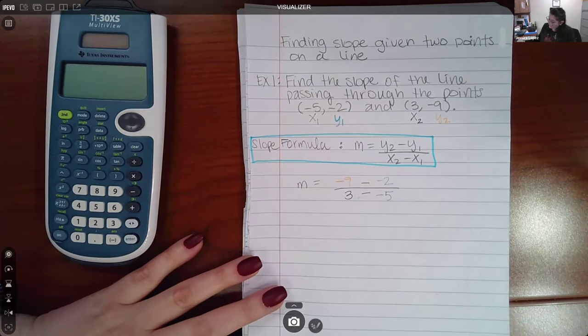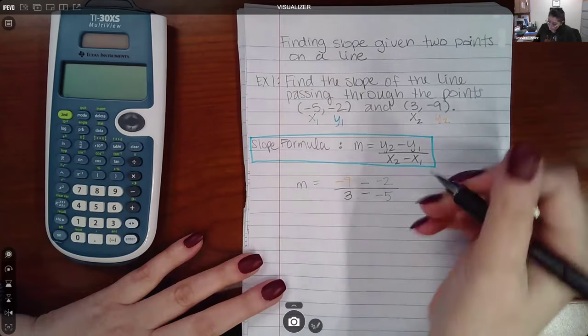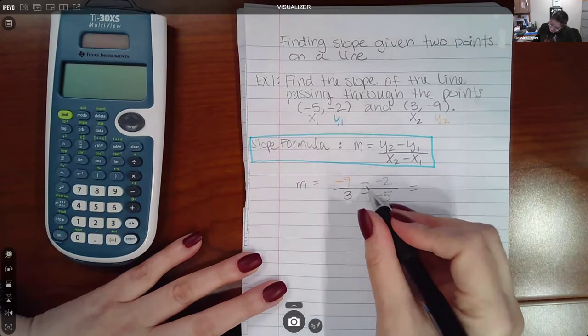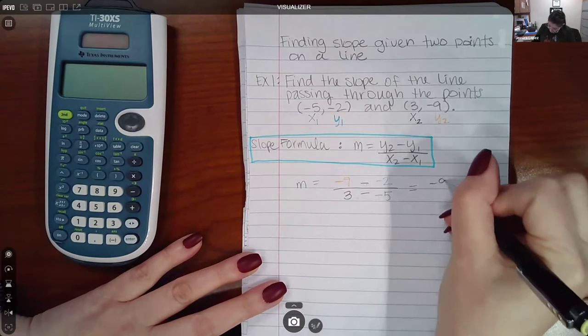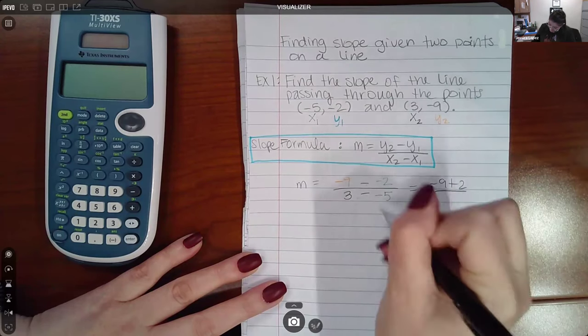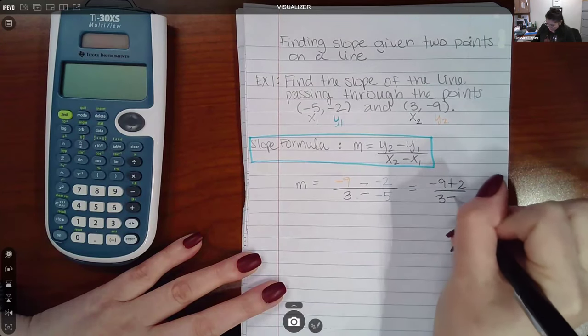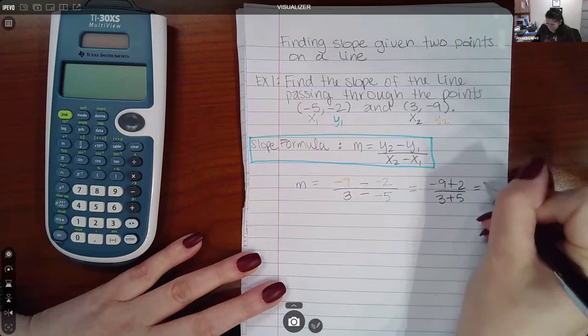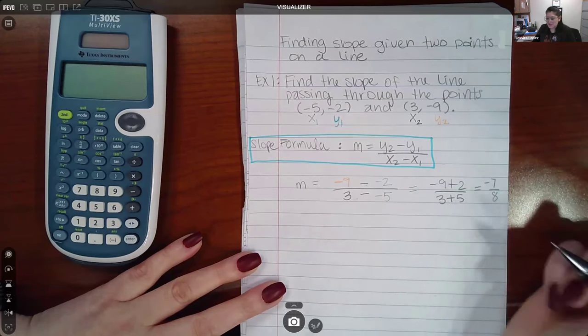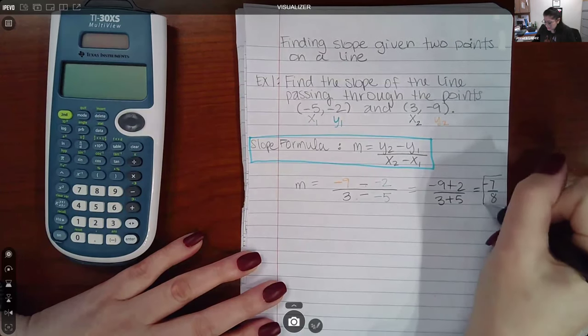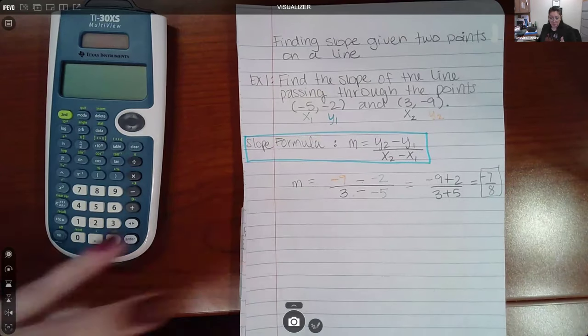You can type all of this in your calculator. However, I'm going to use my signs. So a negative and a negative will turn into a plus. Again, a negative and a negative will turn into a plus. So I get negative seven over eight, which does not reduce. This is the slope between these two points.